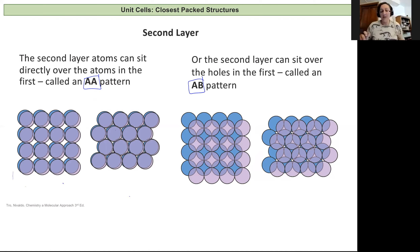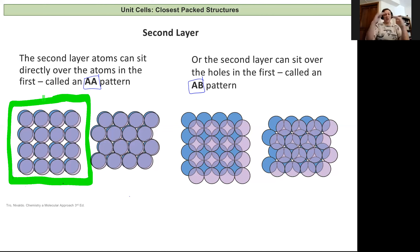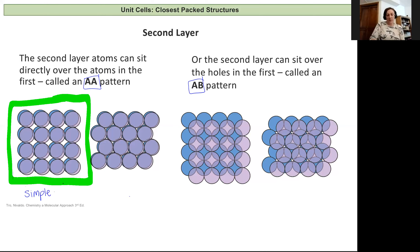As we do this, we're going to start developing the crystal structures we'll be looking at. If we have the most simple version where we just have the balls stacked directly on top of each other in this AA pattern, this will give us what we call a simple cubic arrangement or crystal lattice. This will be one of the ones we're responsible for knowing this quarter.